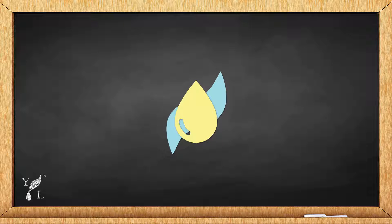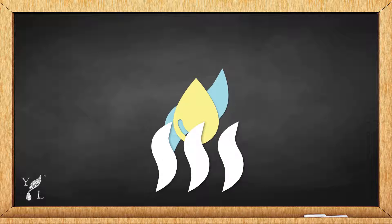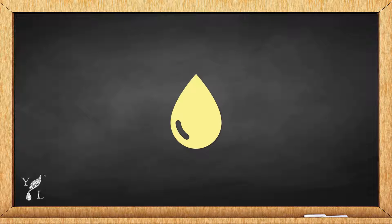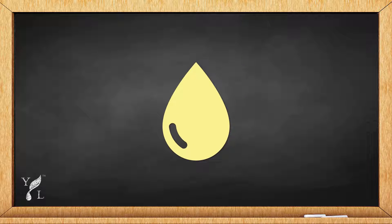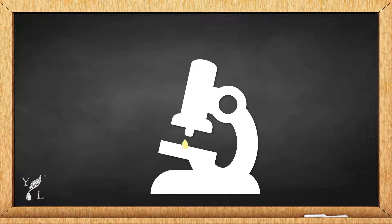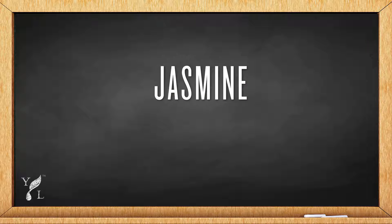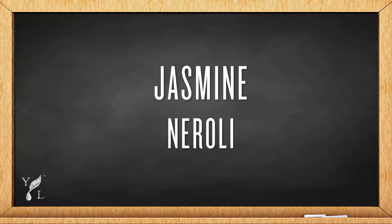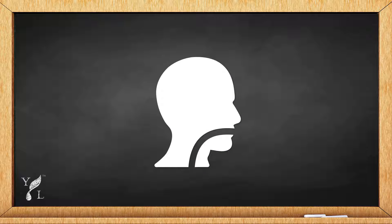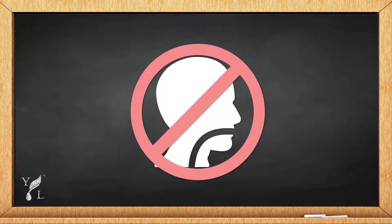Then, in order to separate the solvent from the essential oil, a second extraction uses steam to recover the solvent and produce the final absolute oil. The absolute oil is then collected and sent to our laboratory for testing. Absolute oil extraction is only used for jasmine and neroli essential oil, and it's important to note that a trace residue of the solvent may be left behind, so ingestion of these oils is not recommended.